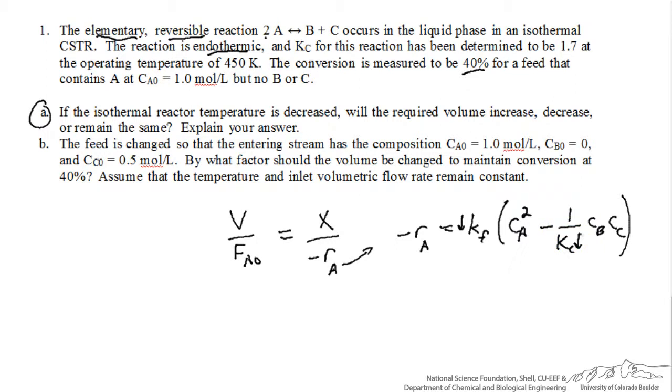Both of those factors tend to decrease the rate. We can see the rate is directly proportional to the forward rate constant, so we'll be decreasing the rate through Arrhenius dependence. Because we're subtracting this number, decreasing Kc increases this number we're taking a negative of, and that will decrease the net rate of reaction of A. The overall effect, if we lower the temperature, is we lower the rate of consumption of A, and this will ultimately decrease the conversion we can achieve in a reactor of fixed volume.